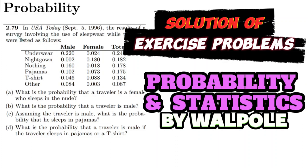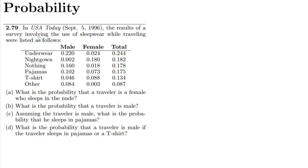Welcome back guys, this is question 2.79. The statement is: in USA Today dated September 5, 1996, the results of a survey involving the use of sleepwear while traveling were listed. The sleepwear categories are given for male, female, and total — these are underwear, nightgown, nothing, pajamas, t-shirt, and others.